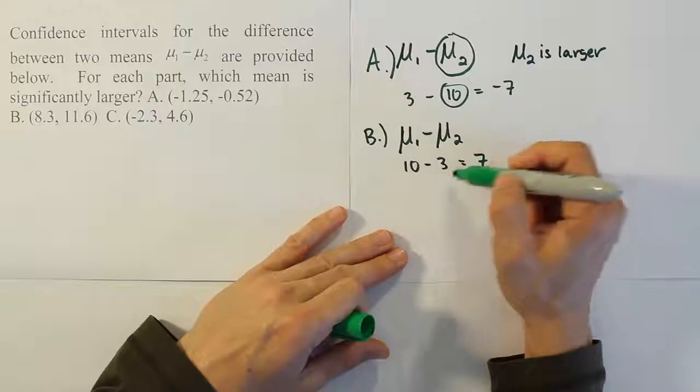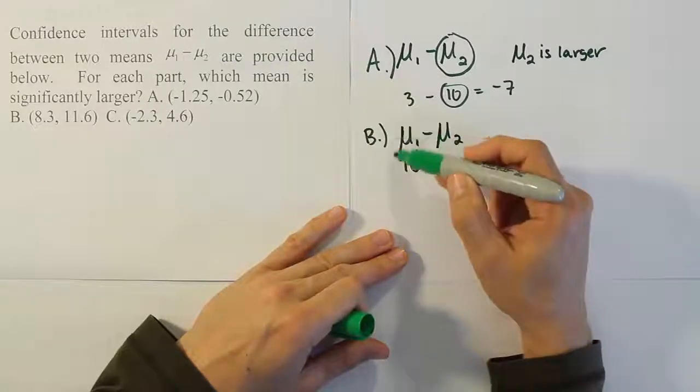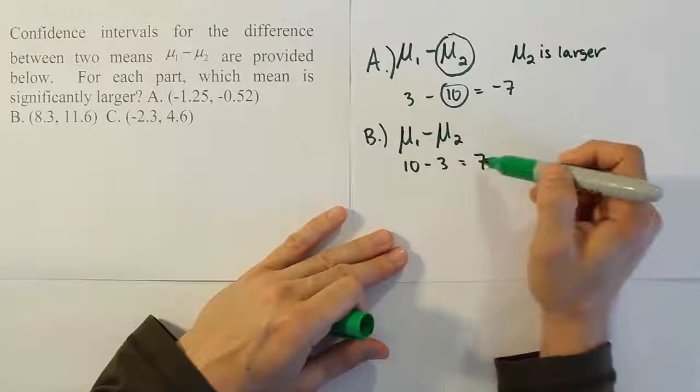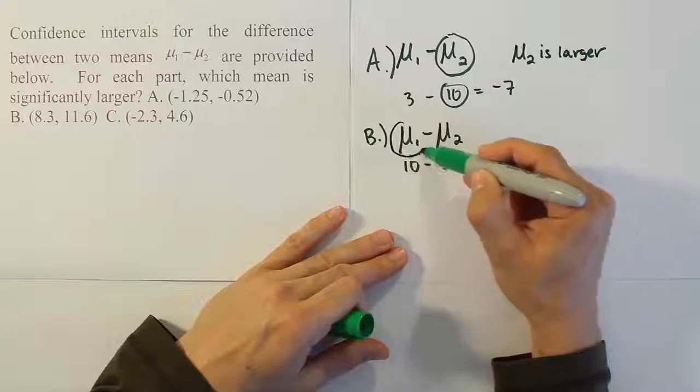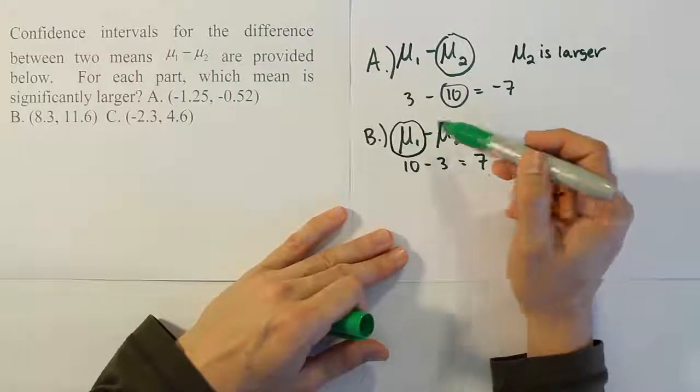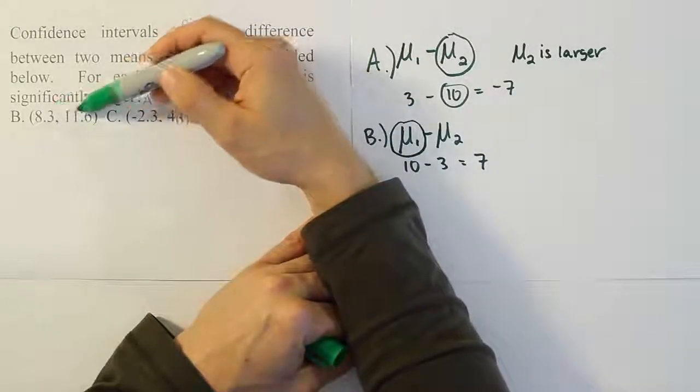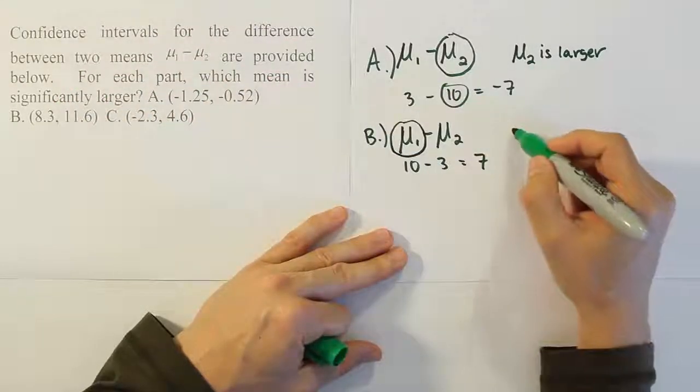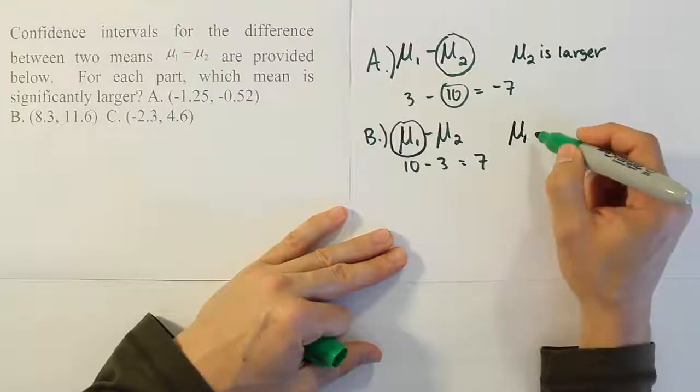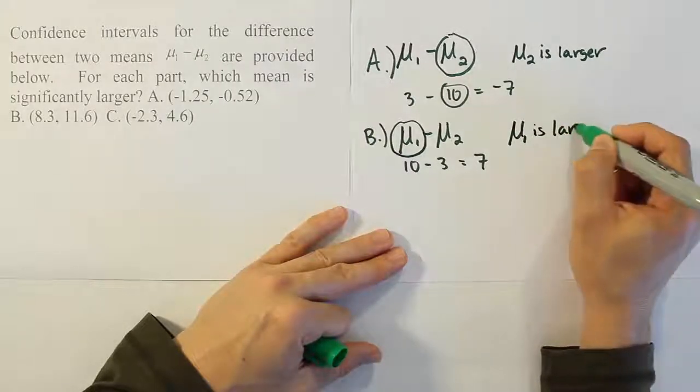I mean, or sorry, 10 minus 3 always gives you positive 7, but in other words, the difference between these two means is going to be positive only when the first mean is bigger than the second one. And after subtracting and adding your margin of error to that sample mean difference, if you still end up with a positive interval, it must mean that mean 1, pardon me, was significantly larger than mean 2.